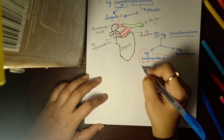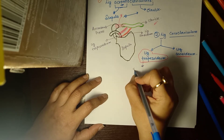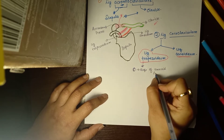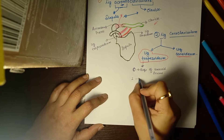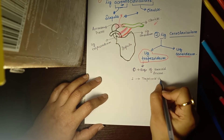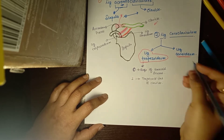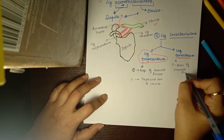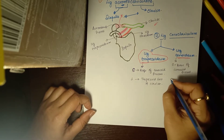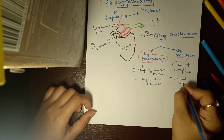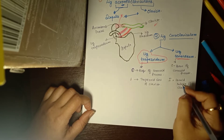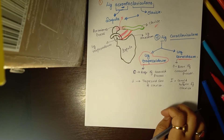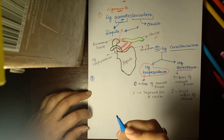To summarize the origin and insertion: the trapezoid ligament originates from the base of the coracoid process and inserts into the trapezoid line of the clavicle. The conoid ligament also originates from the base of the coracoid process and inserts into the conoid tubercle of the clavicle. So both ligaments start from the coracoid process at the base.